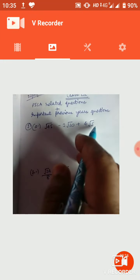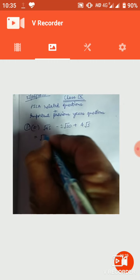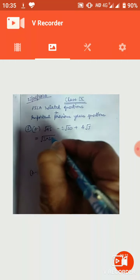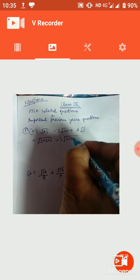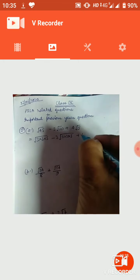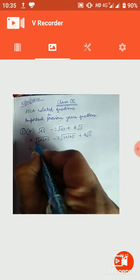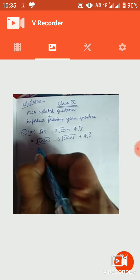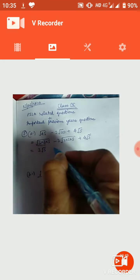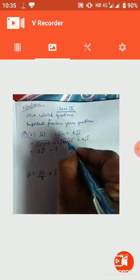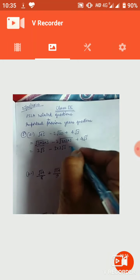पहले आप देखिए: 45 के फैक्टर 3 × 3 × 5, minus 3 into 20 के फैक्टर 2 × 2 × 5, plus 4√5. 5 पहले से prime है, उसके कोई फैक्टर नहीं होंगे। अब देखिए square root के अंदर 3 का pair है तो एक फैक्टर बाहर आ जाएगा — यह हो गया 3√5 minus, इस pair में से 2 बाहर आ गया, 3 × 2√5 plus 4√5.